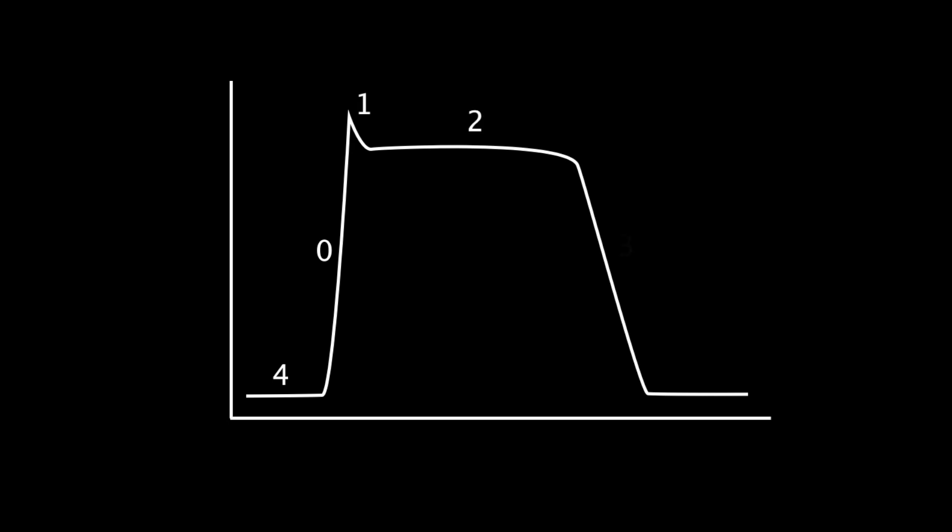Phase 2 is the plateau phase — a very slow repolarization that essentially has a balanced charge. Phase 3 is rapid repolarization, which will cause an overall negative charge. When any of the phases are disrupted, it can cause an irregular heartbeat.